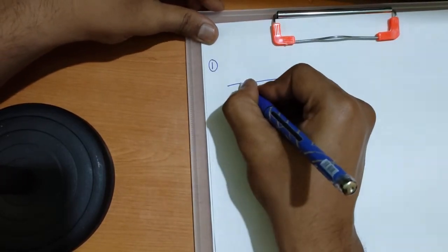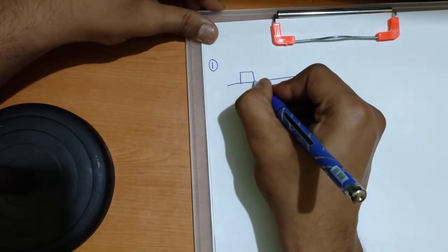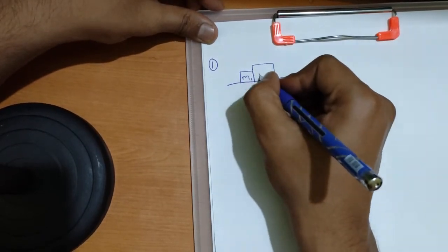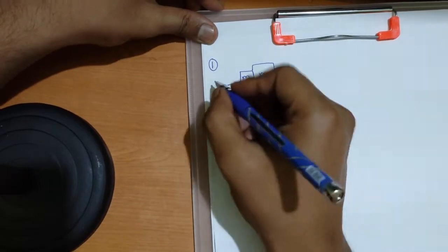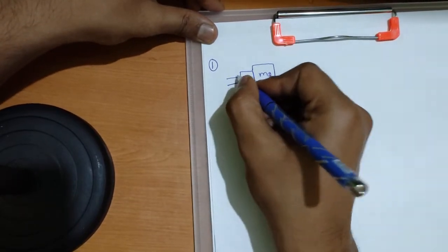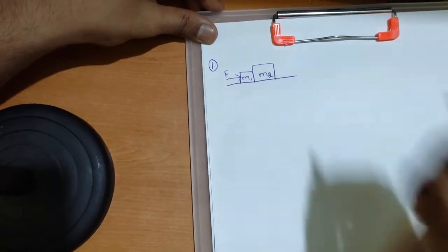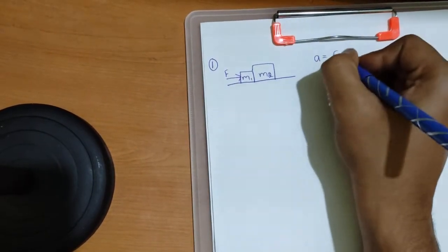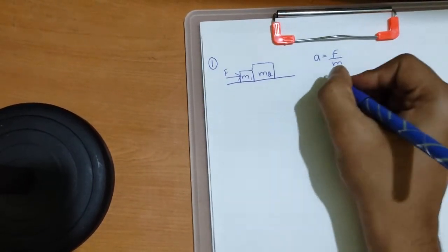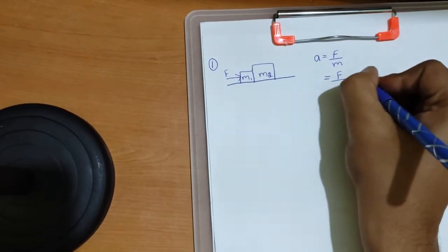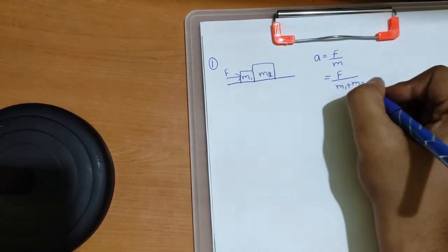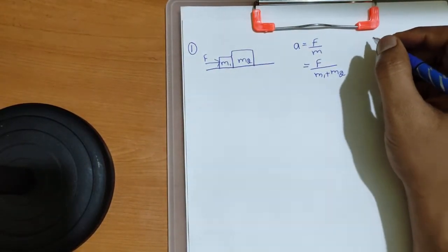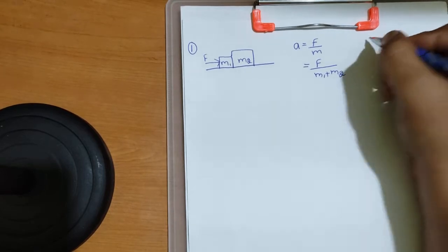Let's take a frictionless surface. I have placed one block of mass m1 and another block of mass m2. Now if I apply a force F, the acceleration — we know that it's force by mass — so it's F by the sum of the total masses, m1 plus m2. This everyone can write; acceleration is not a big task.